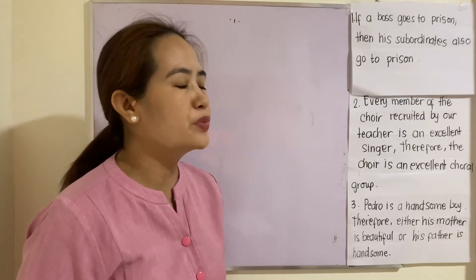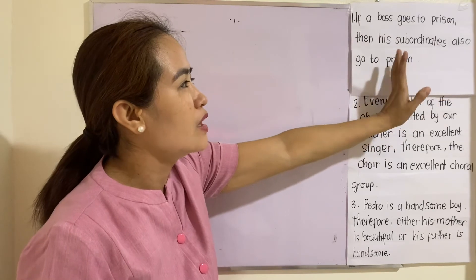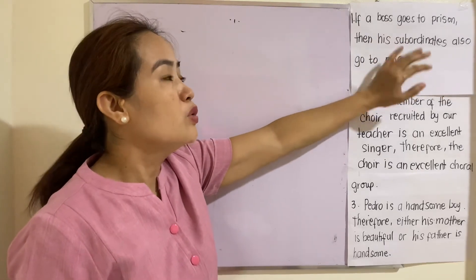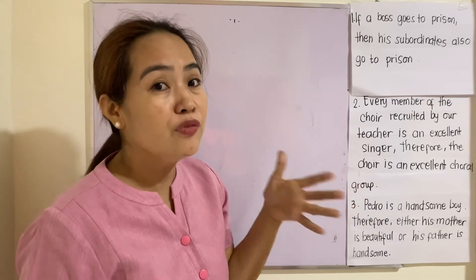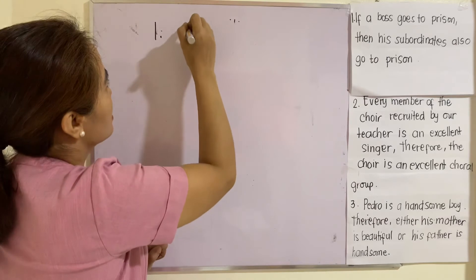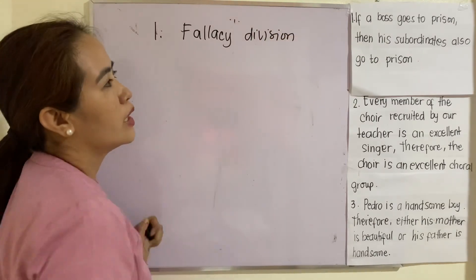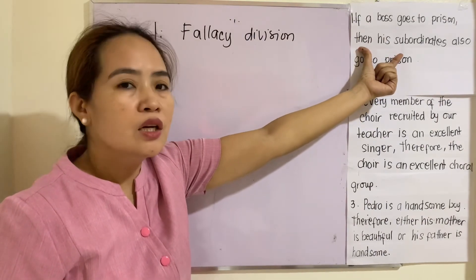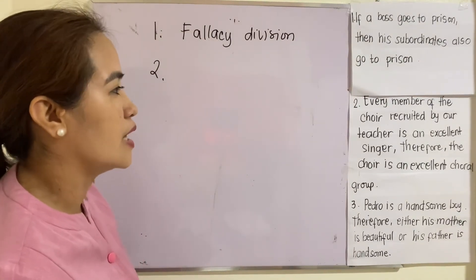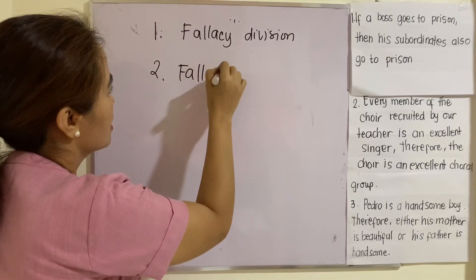Fallacy of division is the reverse of fallacy of composition — the common characteristics of the whole are attributed to the individual parts. Fallacy of relevance is a proposition in which there is a relevance issue from the premise. Example one: if a boss goes to prison, then his subordinates also go to prison. This is a fallacy — does that mean if your boss goes to prison, you are also committing the same crime?